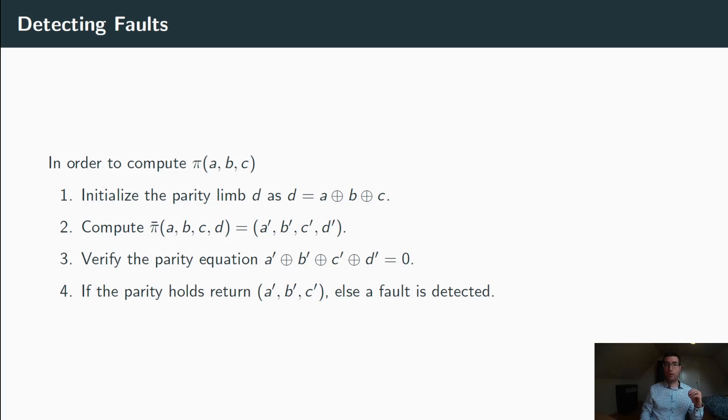On the other hand, if the parity equation is not satisfied by the output, we know by the parity-preserving property that a fault must have occurred. And this is how we detect faults.